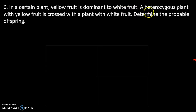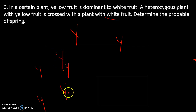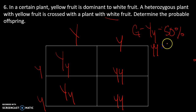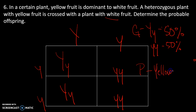Number six: in certain plants, yellow fruit is dominant to white. A heterozygous yellow fruit plant is crossed with a white fruit plant — white being recessive. We've got our cross here. Genotypically: capital Y lowercase y (heterozygous dominant) at 50%, and homozygous recessive at 50%. Phenotypically, we're going to see yellow fruit 50% of the time and white fruit 50% of the time.